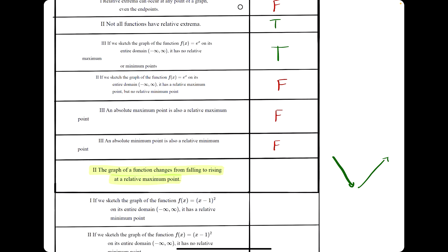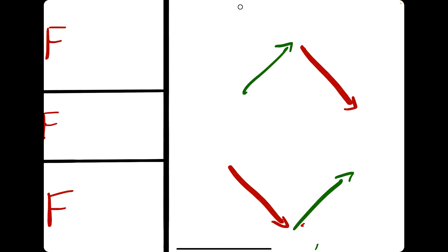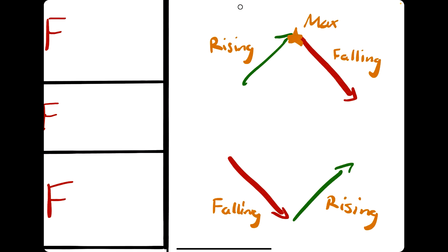The next statement says the graph of a function changes from falling to rising at a relative max point. Falling to rising looks more like a minimum — it's another way to describe decreasing to increasing, so this describes a relative minimum rather than a relative max. This statement is false. A change from rising to falling is a max, and a change from falling to rising is a minimum.